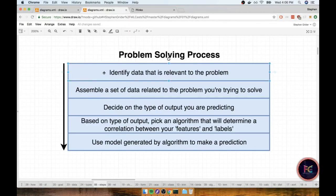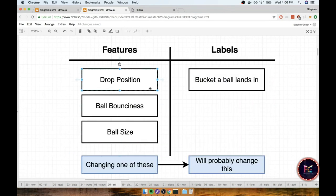In the last section we were able to identify data that was relevant to the problem we were trying to solve. Remember we had said that we want to somehow record our drop position, our ball bounciness, ball size, and the bucket that a ball lands in.